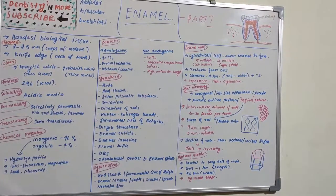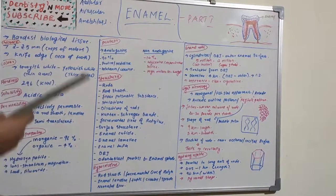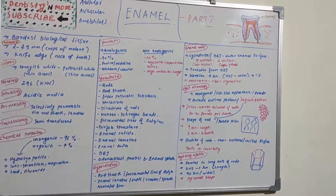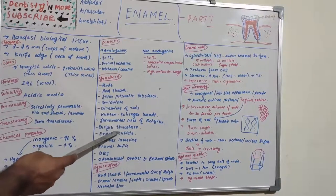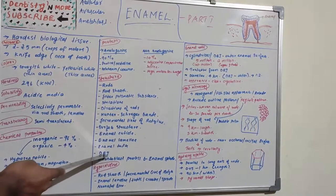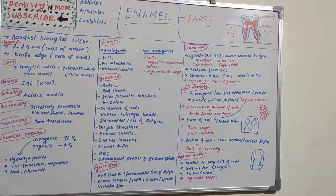There are various structures to learn in enamel, which are very important as they can be asked as short notes or long essays. These include: enamel rods, rod sheath, interprismatic substance, striations, direction of enamel rods, Hunter-Schreger bands, incremental lines of Retzius, surface structures of enamel, enamel cuticle, enamel lamellae, enamel tufts, dentino-enamel junction, and enamel spindles.